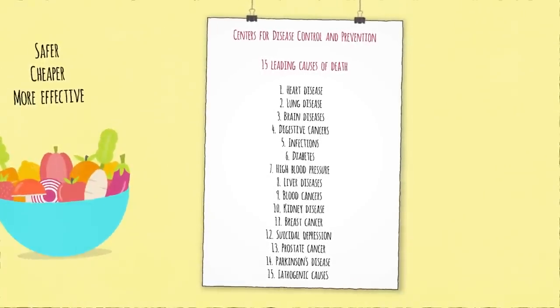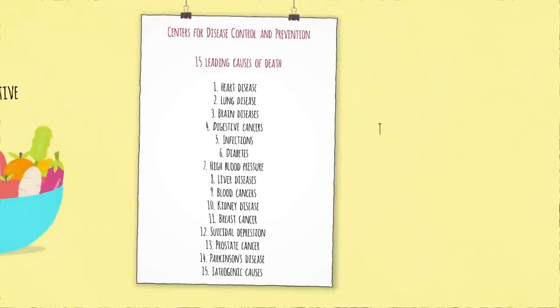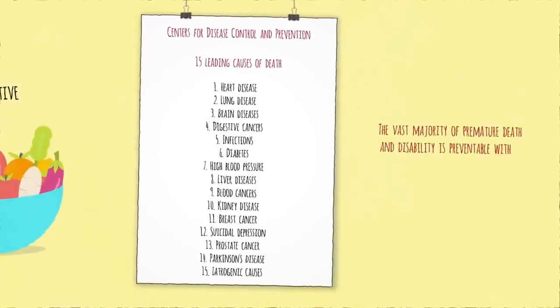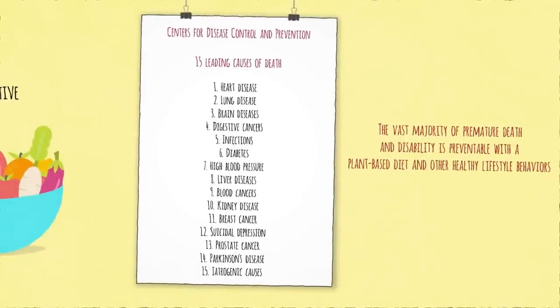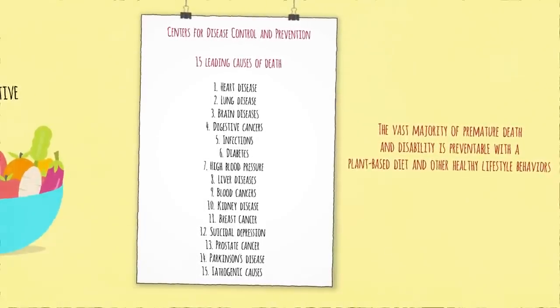That's the first half of the book, and the good news is that we have tremendous power over our health destiny and longevity. The vast majority of premature death and disability is preventable with a plant-based diet and other healthy lifestyle behaviors.